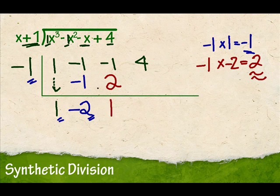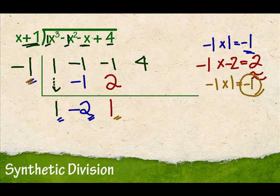Of course, we do it again. Negative 1 times 1. Negative 1 times 1 is negative 1. And this negative 1 goes right here. I'm going to add down. 4 minus 1 is 3.